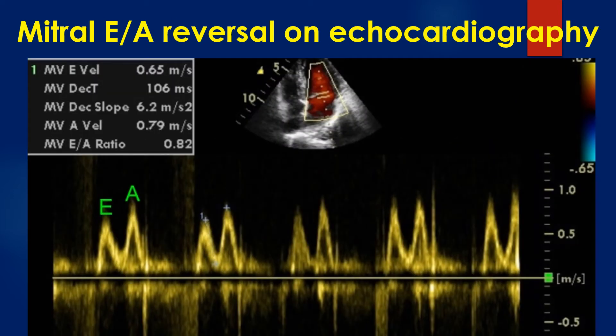Conventional Doppler assessment of transmitral flow showing E by A reversal in left ventricular diastolic dysfunction. MVE: early mitral inflow velocity; MVDCT: deceleration time of early mitral inflow velocity; MVD slope: deceleration slope of mitral inflow velocity; MVA: mitral inflow velocity during atrial systole; MVE by A ratio: ratio between early mitral inflow velocity and atrial systole mitral inflow velocity.